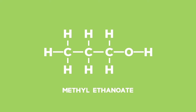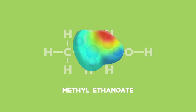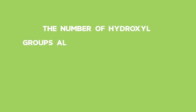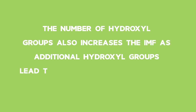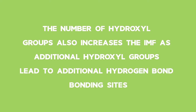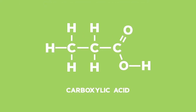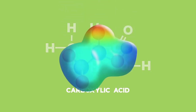Alcohols have the hydroxyl group, which means that alcohols can form very strong hydrogen bonds. Alcohols have stronger IMF than esters, so the molecules don't break apart as easily. The number of hydroxyl groups also increases the IMF, as additional hydroxyl groups lead to additional hydrogen bond bonding sites. Carboxylic acids have a carboxyl group, which consists of an OH group and a double bond O. This means they can form hydrogen bonds, but also have an additional bonding site for dipole-dipole bonds, making the IMF stronger than those of alcohols.